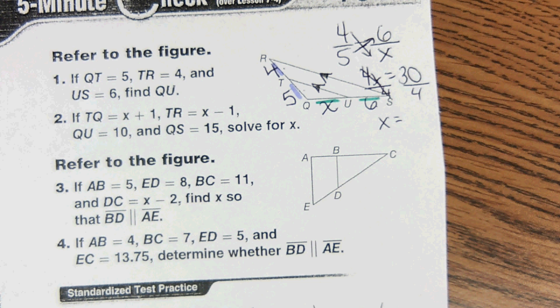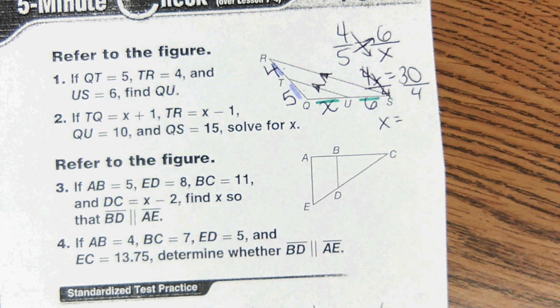So we have four x equals thirty, divided by four...